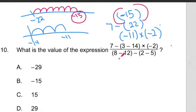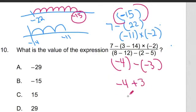What do we got on the bottom? 8 minus 12. Alright, negative 4. Minus 2 minus 5, negative 3. We've got a negative, the opposite of a negative is a positive. So we're really doing negative 4 plus 3. What do we get? Negative 1.